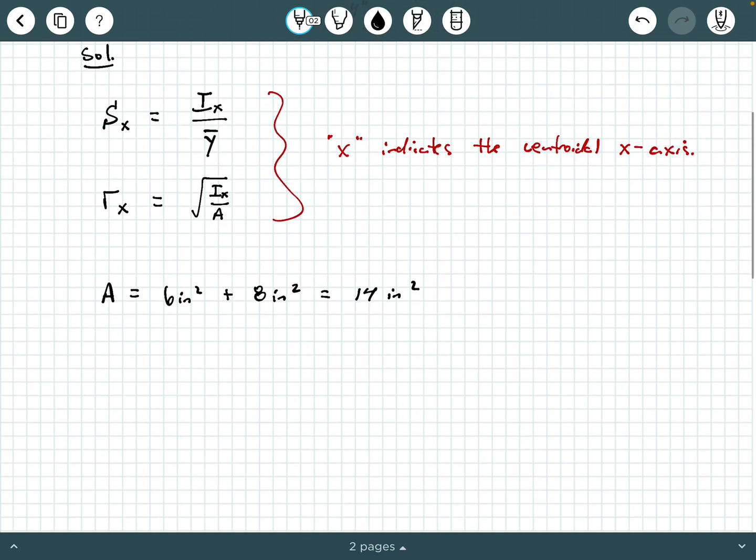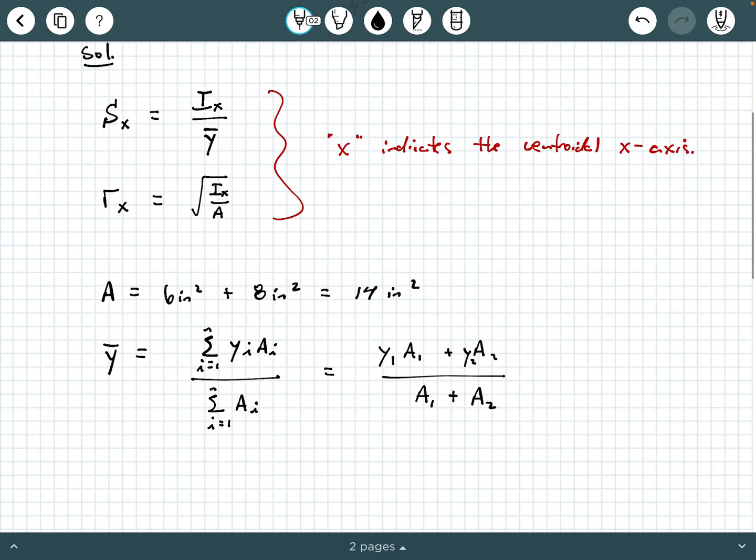The next thing we can go ahead and get is y bar. So, if you remember, for a composite shape, which, remember, a composite shape is several simple shapes that are kind of combined together. We're going to have the summation as i goes from 1 to n of y sub i, a sub i, all divided by the summation i goes from 1 to n of a sub i. Well, we can expand this, and we'll say this is y1a1 plus y2a2 divided by a1 plus a2. Because we have two shapes, and we already kind of separated it into a stem and a flange, or a web and a flange is what we call it sometimes.